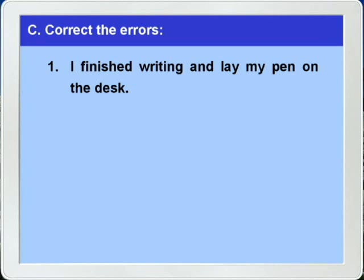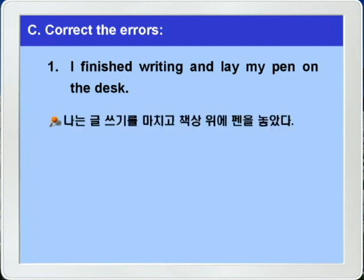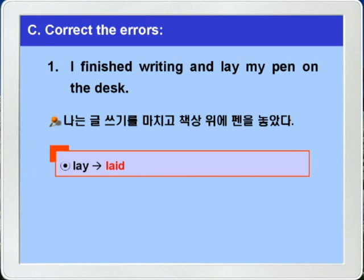같은 동사가 문장에 따라서 다양한 의미와 형태로 쓰인다는 것을 살펴보셨을 겁니다. C번으로 갑니다. C번은 틀린 것을 고치라는 문제네요. 1번, I finished writing and lay my pen on the desk. 의미상 책상 위에 펜을 놓았다라는 뜻입니다. 타동사 lay는 lay, laid, laid로 변하는데, finished가 과거니까 lay도 과거형 laid로 바꾸면 되겠습니다.